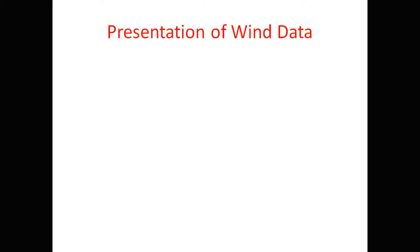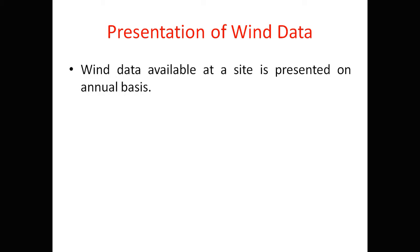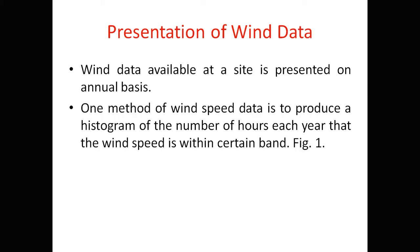Now let us see the second part: presentation of wind data. Wind data available at a site is presented on an annual basis. We take data for each hour up to one year. One method is to produce a histogram of the number of hours each year that the wind speed is within a certain band — that is, the number of hours per year for each wind speed range.